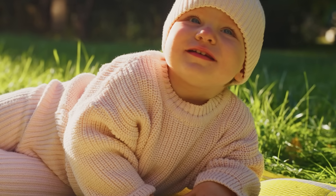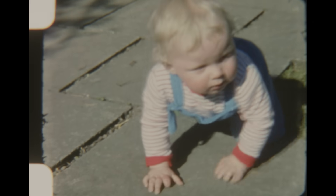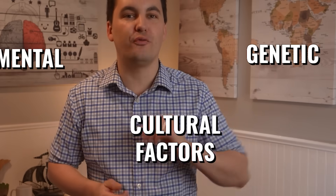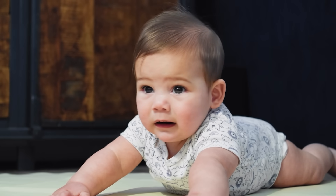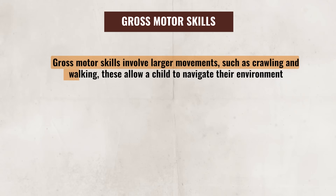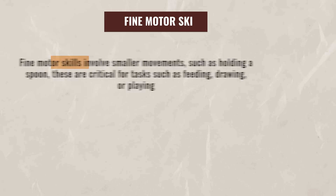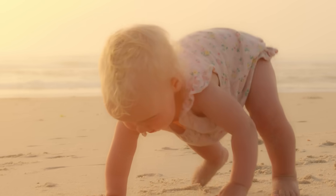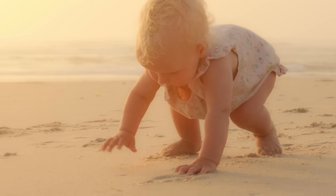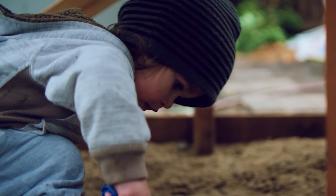Generally, we see physical development in infancy and childhood happen in the same order. For example, babies usually learn to roll over before they can sit up. However, while the order is generally consistent, the age at which children reach each milestone can vary, due to different genetic, environmental, or even cultural factors. For instance, a child who spends more time on their stomach during playtime — often called tummy time — may develop neck and shoulder muscles faster, which will help with earlier crawling. As a child develops, they develop fine and gross motor skills, which each play a critical role. Gross motor skills involve larger movements such as crawling and walking, allowing a child to navigate their environment. Fine motor skills involve smaller movements such as holding a spoon, critical for tasks like feeding, drawing, or playing. As a child physically develops, they continue to gain more freedom to explore their environment, allowing them to become increasingly aware of their surroundings and allowing for more learning to occur.